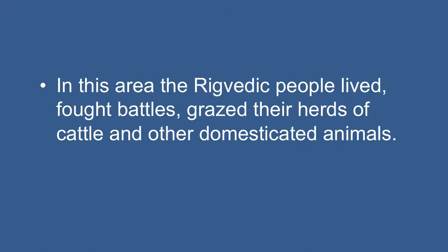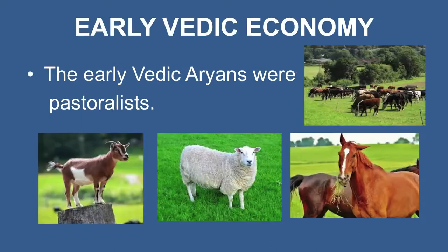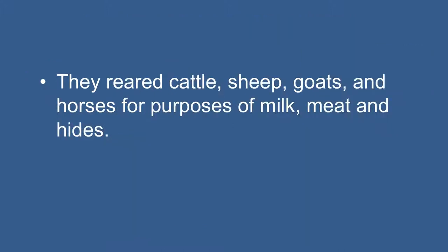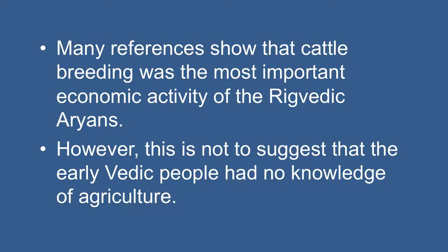In this area, the Rig Vedic people lived, fought battles, and grazed their herds of cattle and other domesticated animals. Gradually moving eastward, they came to occupy Eastern UP and North Bihar during the later Vedic period, coming into contact with people who spoke different languages. The early Vedic Aryans were pastoralists; cattle rearing was their main occupation. They reared cattle, sheep, goats, and horses for the purpose of milk, meat, and hides. Cows were thought of as providers of everything, and prayers were offered for increase in the number of cattle. Many references show that cattle rearing was the most important economic activity of the Rig Vedic Aryans.